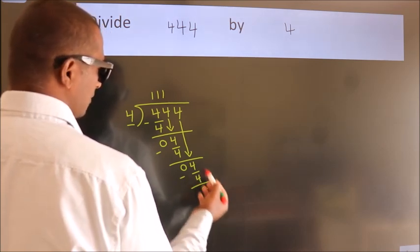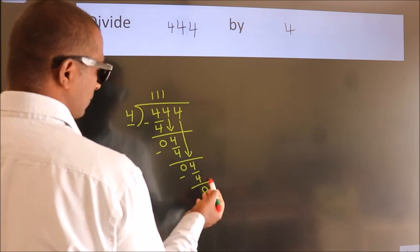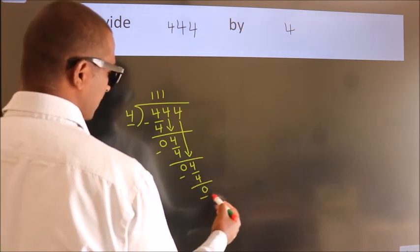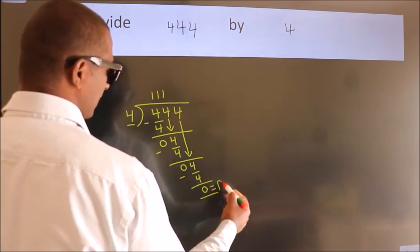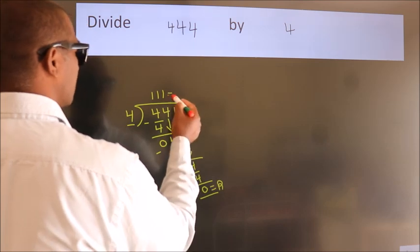After this, no more numbers to bring it down. So we stop here. This is our remainder. This is our quotient.